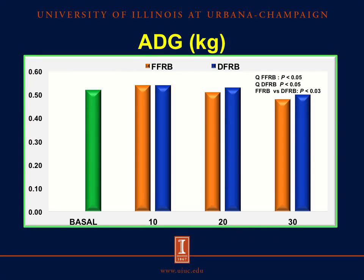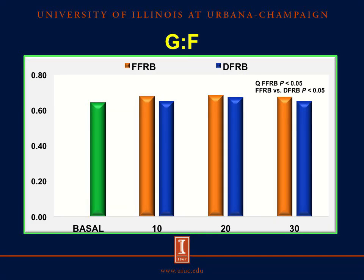For average daily gain, there was a quadratic effect of inclusion level of the ingredient. The average daily gain increased at 20 percent but then decreased at 30 percent. It's important to mention that the average daily gain at 30 percent was not different from the average daily gain for the basal diet. Similar results were observed by Warren and Farrell in 1990 and by Hartfeld in 2013. For gain-to-feed ratio, there was also a quadratic effect of full fat rice bran, but no effect for increased inclusion level of defatted rice bran. The gain-to-feed ratio was greater for pigs fed full fat rice bran than for pigs fed defatted rice bran.